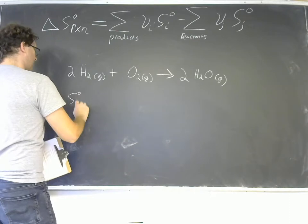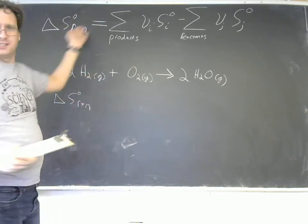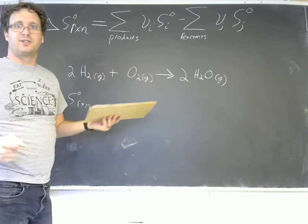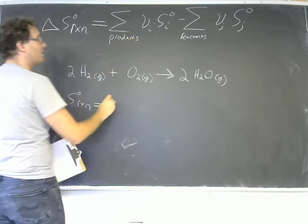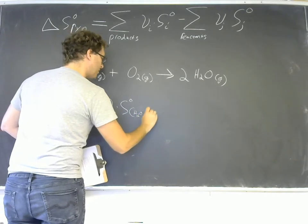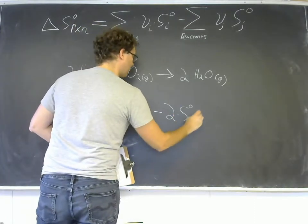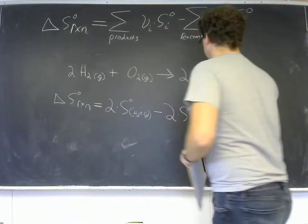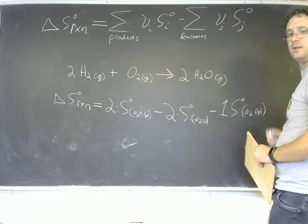If I wanted to find the entropy of this reaction, delta S° of reaction—by the way, that is called a naught symbol, which I, when I was an immature college student like yourself, just loved calling it the delta snot of the reaction—the delta S° of the reaction is going to equal the sum over our products: 2 times the standard molar entropy for water vapor, minus our reactants, so minus 2 times the standard molar entropy for hydrogen gas, and minus 1 times the standard molar entropy for oxygen gas. That's our formula.